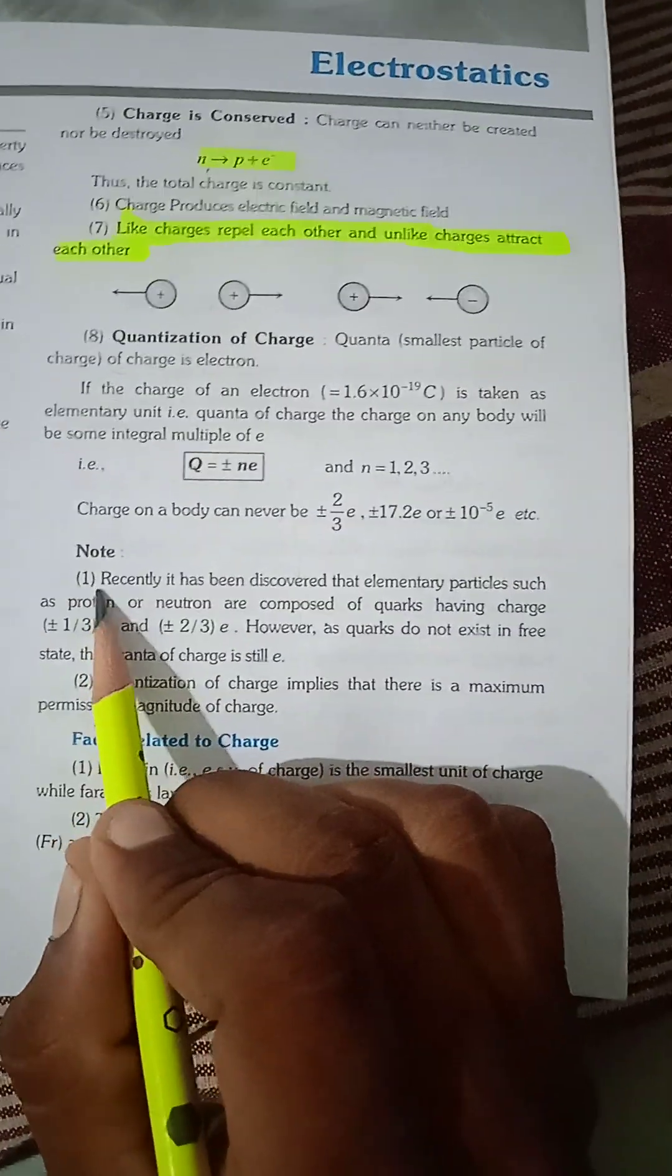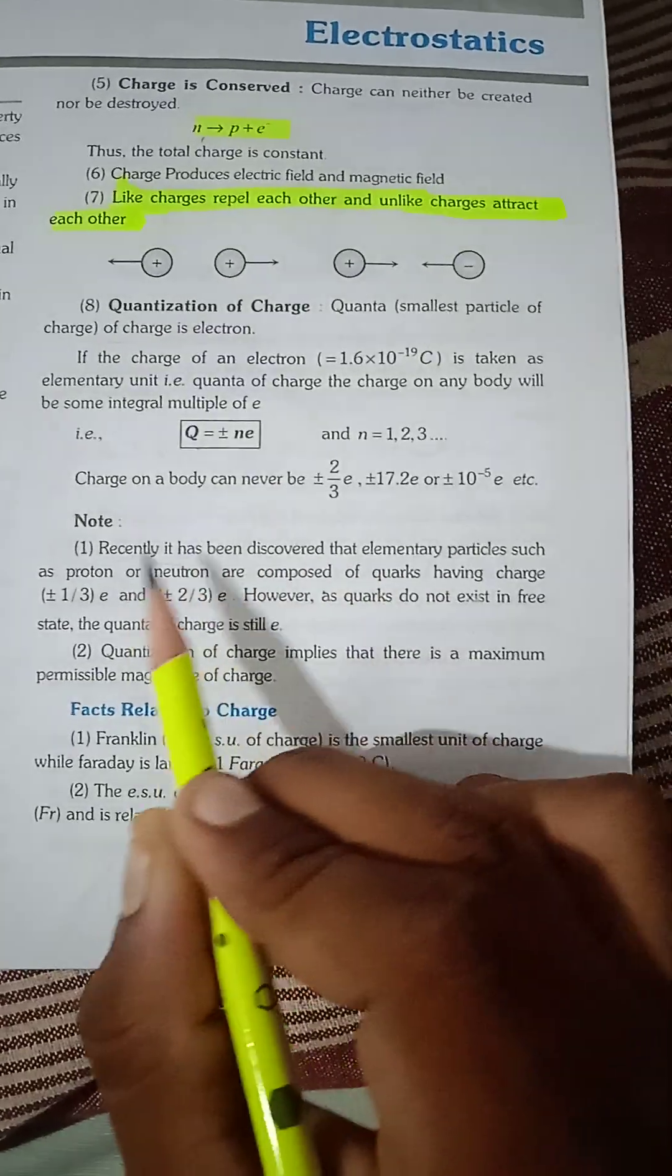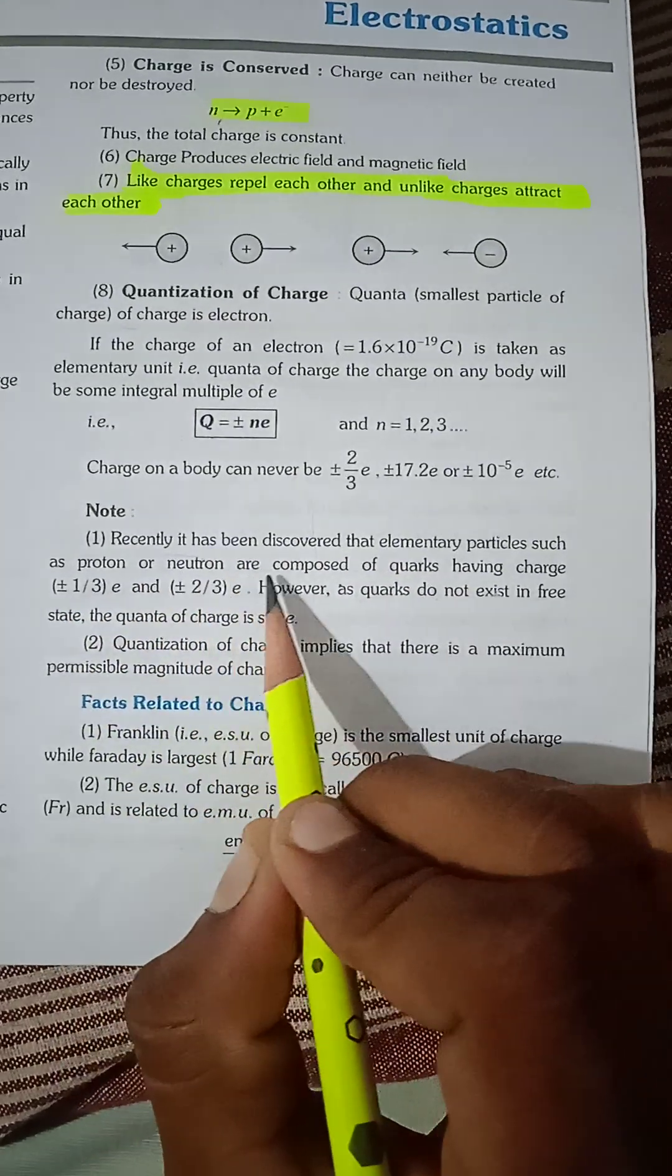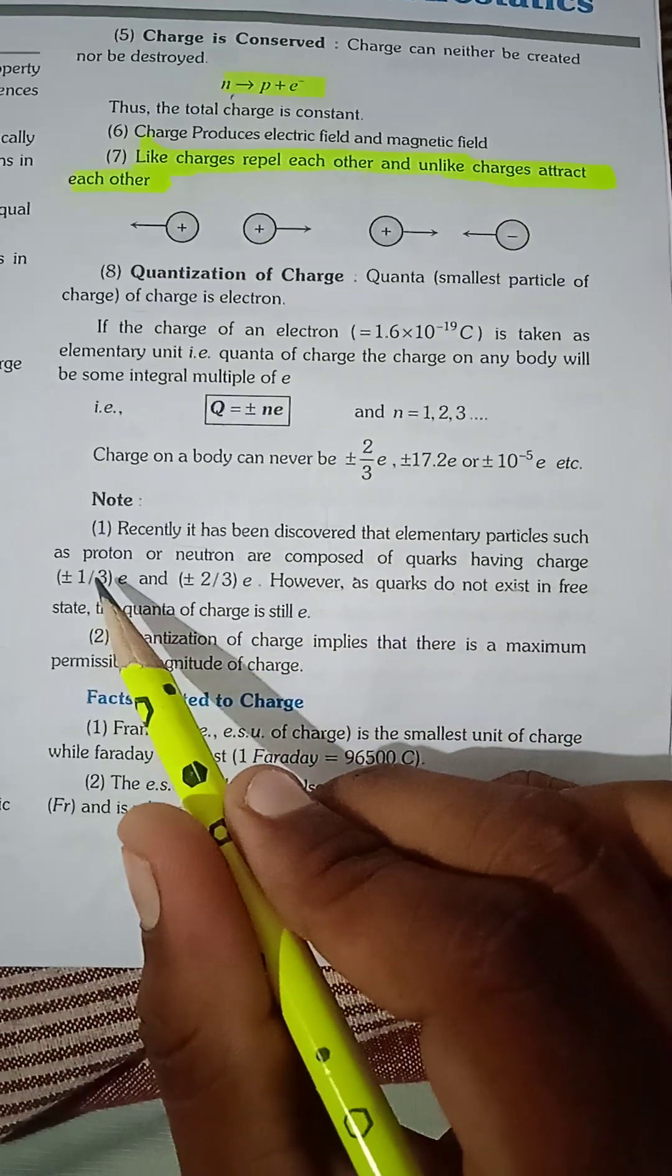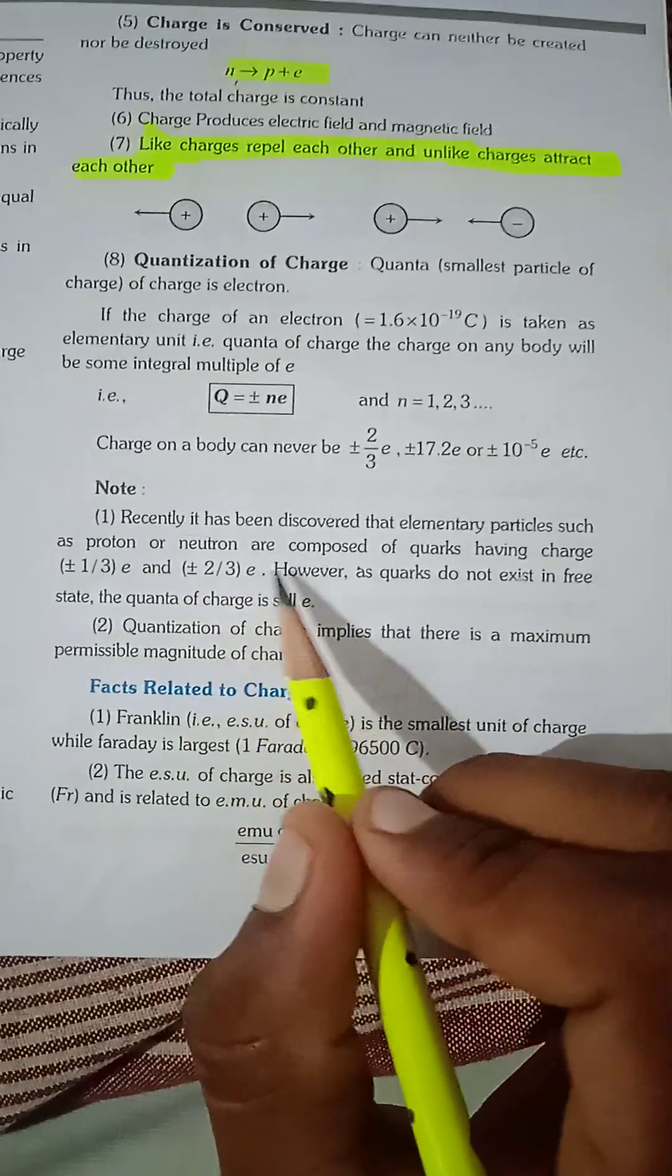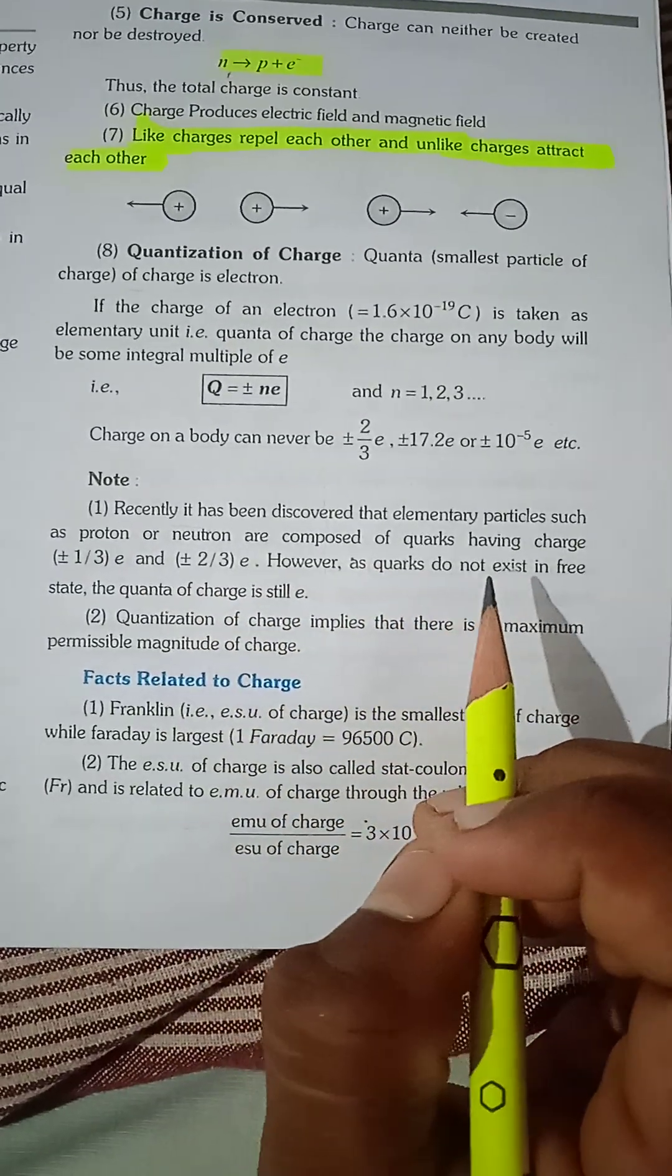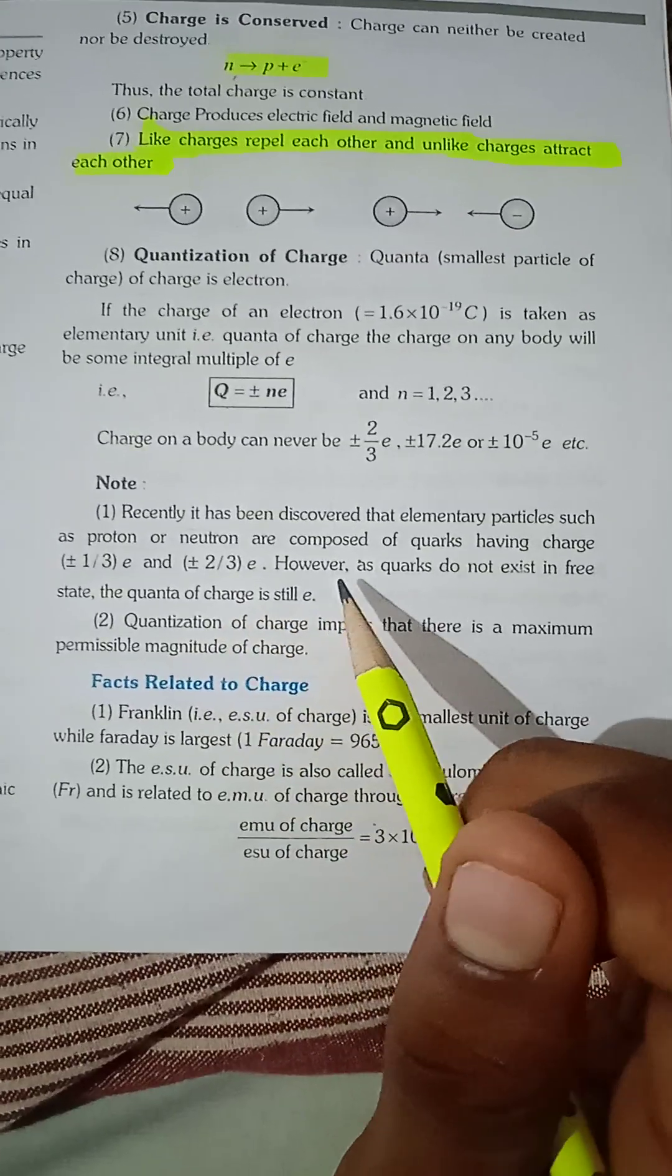Some notes: Recently it has been discovered that elementary particles such as proton or neutron are composed of quarks having charge plus/minus 1 by 3 e and plus/minus 2 by 3 e. However, as quarks do not exist in free state, the quanta of charge is still e.